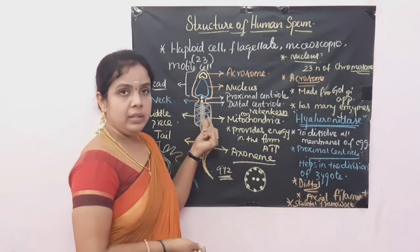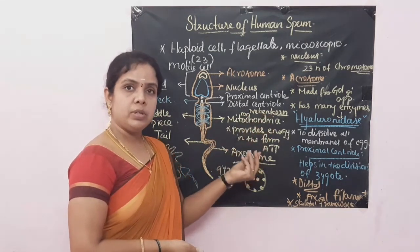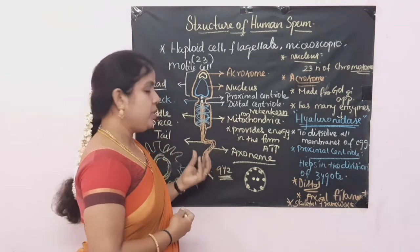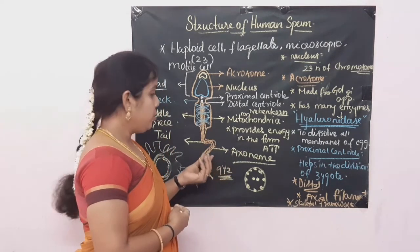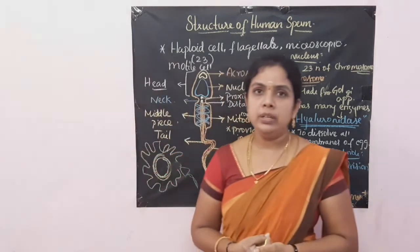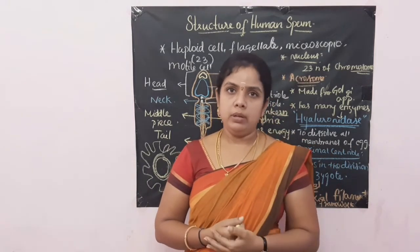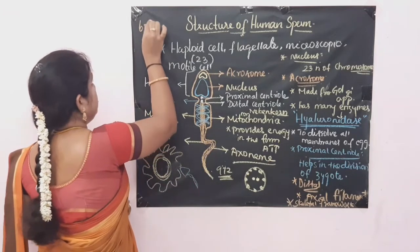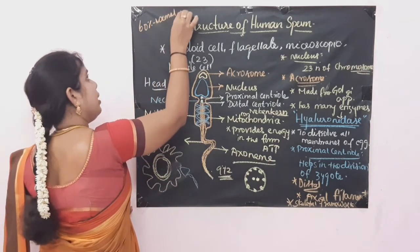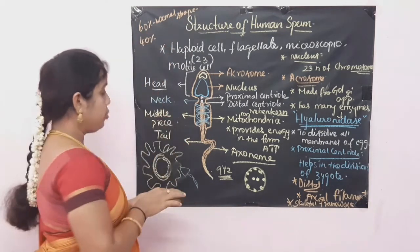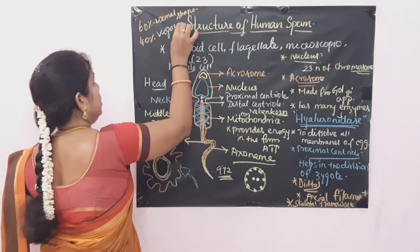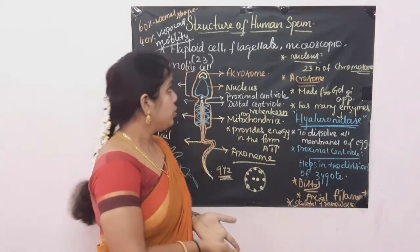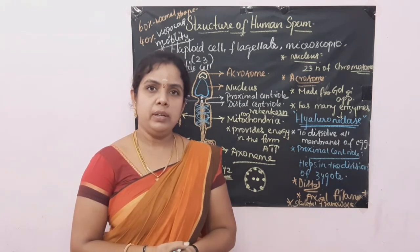The middle piece consists of spirally arranged mitochondria called the nebenkern, which provides energy to the tail in the form of ATP. The tail part is very important because all energy stored as ATP is released to the tail so it can move faster. In total, 60% of sperms are normal in their shape and size, and 40% of these sperms show vigorous motility. We have now completed the structure of human sperm. In the next video, we will discuss about the female reproductive system.